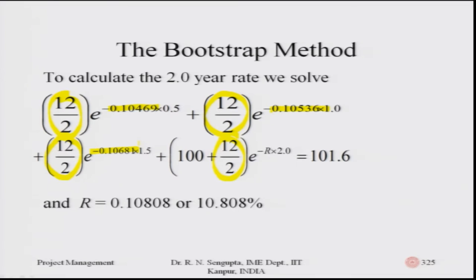The continuous compounding interest rate for two years is considered as R. Equating to the value of 101.6 as given in the table and solving the equation, R comes out to be 10.808 — the continuous compounding interest rate for the two-year period.